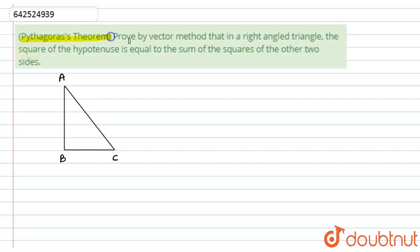Here we have given the Pythagoras theorem. Prove by vector method that in a right angled triangle, the square of the hypotenuse is equal to the sum of the squares of the other two sides. So let us start with the solution.